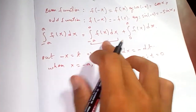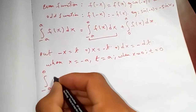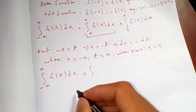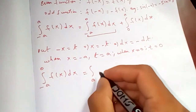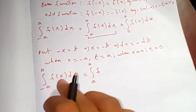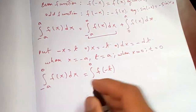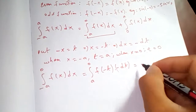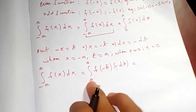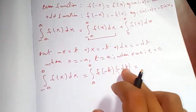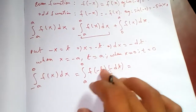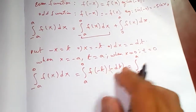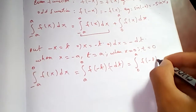Evaluating the integral from minus a to 0 of f(x) dx with the substitution: the limits become a to 0, f(x) is replaced by f(negative t), and dx is replaced by negative dt. Using property two, we interchange the limits, and the negative signs cancel, giving us the integral from 0 to a of f(negative t) dt.